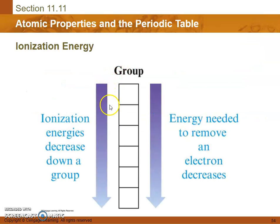So ionization energy decreases as you move down a group. The energy needed to remove an electron decreases.